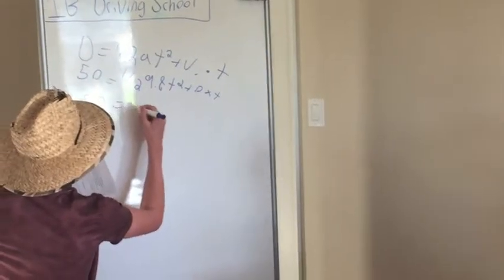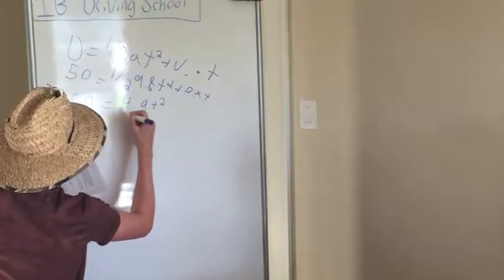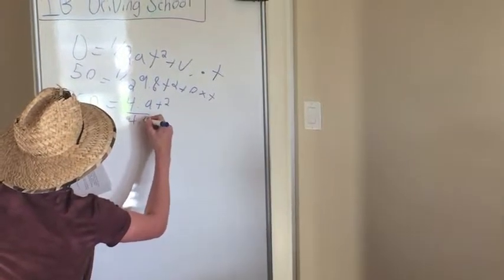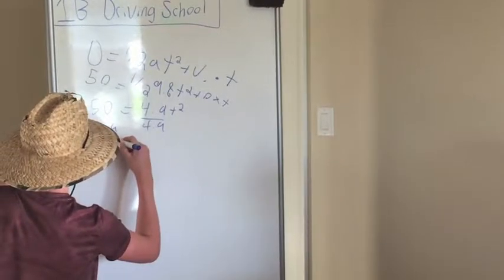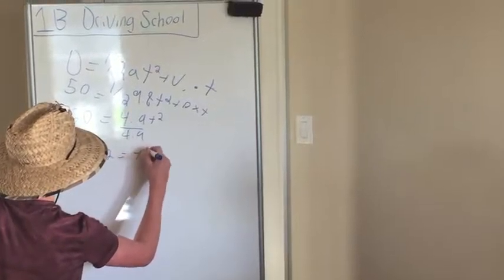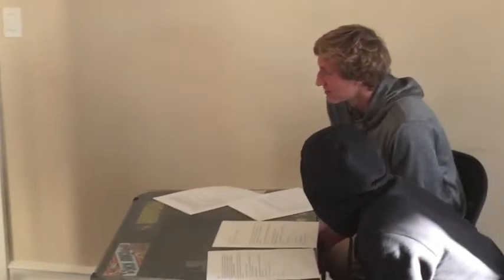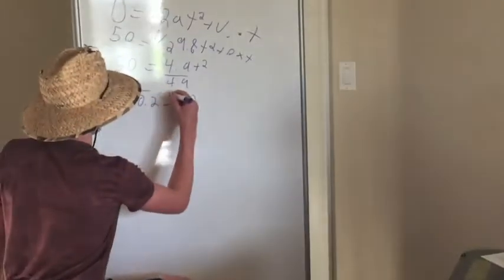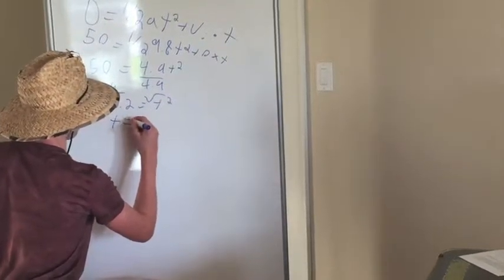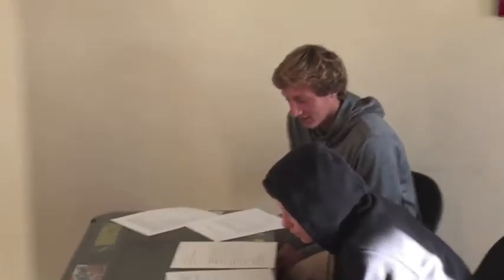Just going to keep on plugging them in. What do we do next, Cole? We have to divide the square root. Yup. So T, what did you get for T, Cole? I got 3.19. Correct.